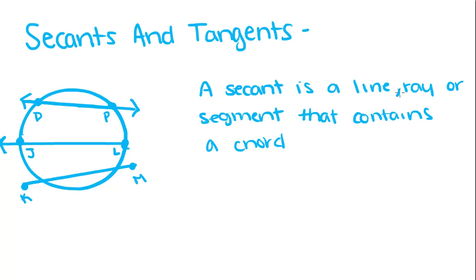So a secant is a line, ray, or segment that contains a chord of a circle. So if you look at this drawing, where the blue lines are, where the blue little dotted lines are, those are chords of the circle.